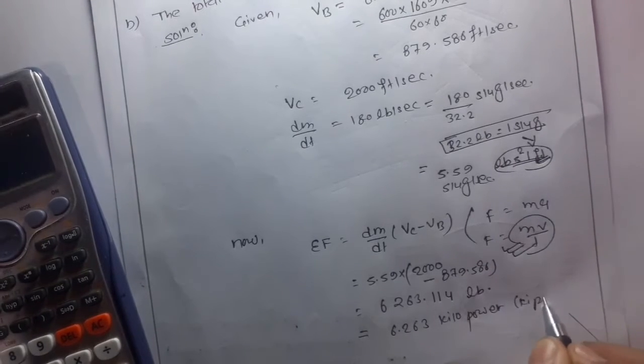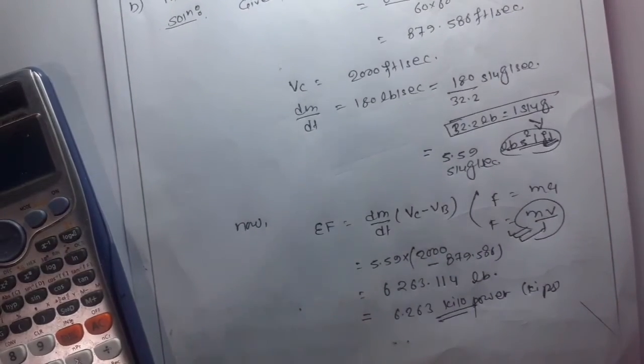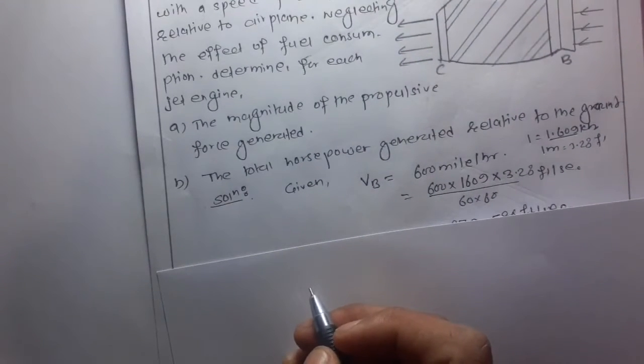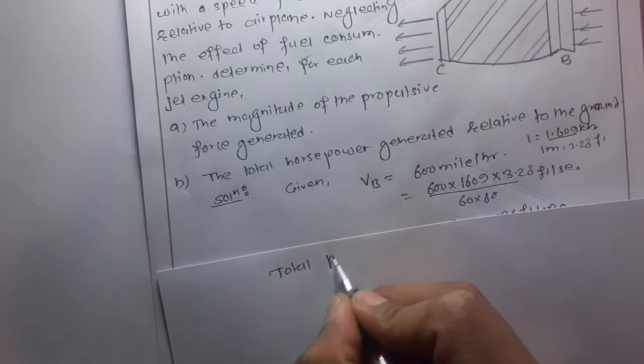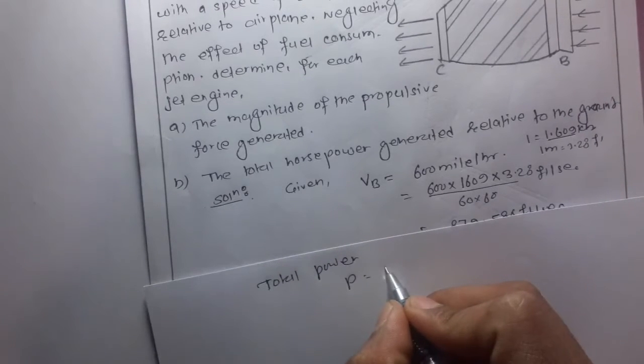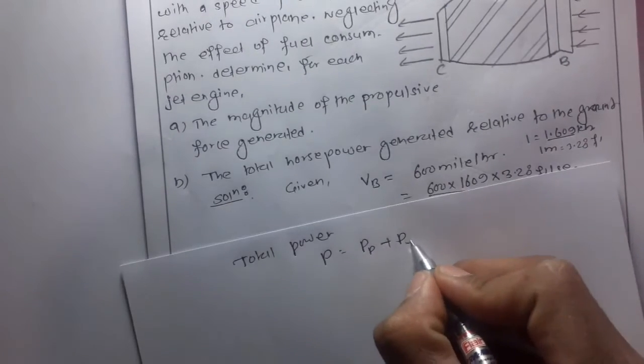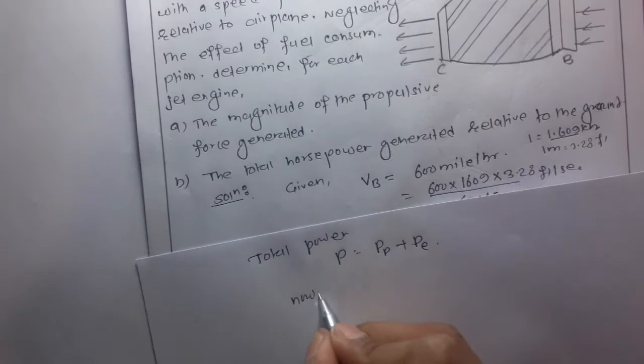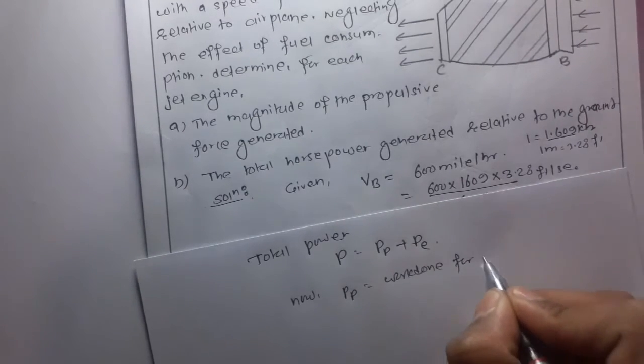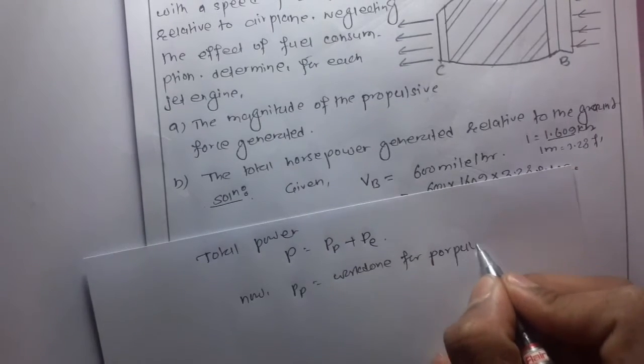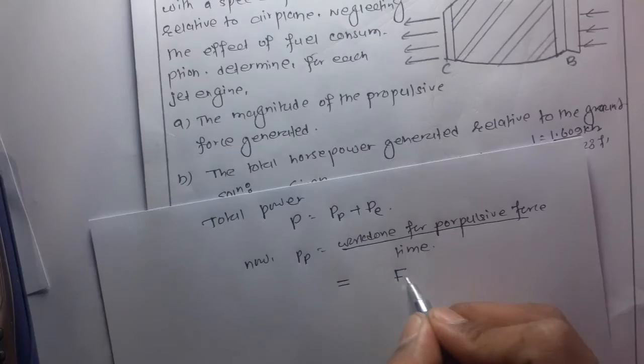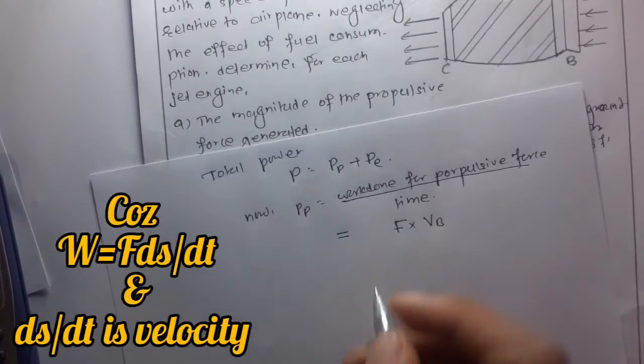Now we have to find the magnitude of the total horsepower generated relative to the ground. The total power is given by P equals the power for propulsion PP plus power for ejection PE.